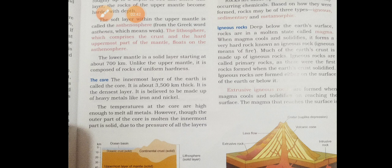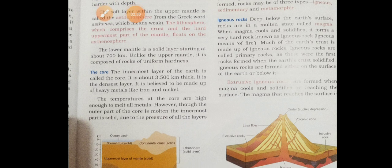Igneous rock, sedimentary rocks and metamorphic rocks. And first we can see that igneous rocks. What is igneous rocks? Deep below the earth surface, rocks are in the molten state called magma. I told you that innermost layer of the earth, the temperature is very high. And because of the heat, the rocks are in the form of molten.